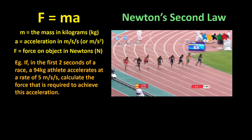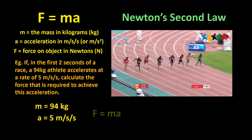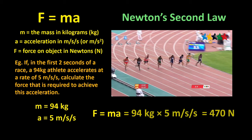If in the first two seconds of a race, a 94 kilogram athlete accelerates at a rate of 5 meters per second per second, calculate the force that is required to achieve this acceleration. Well, M equals 94 kilograms, A equals 5 meters per second per second, and so the force F equals MA, which equals 94 kilograms times 5 meters per second per second, which equals 470 Newtons.